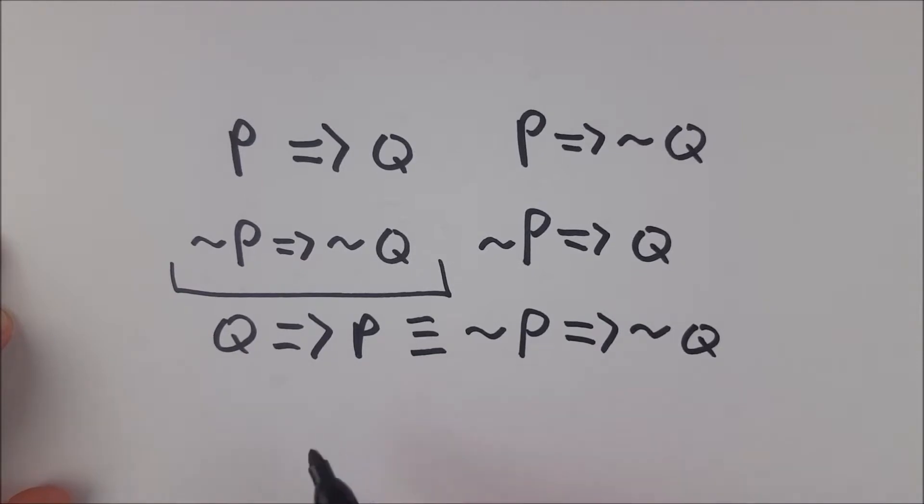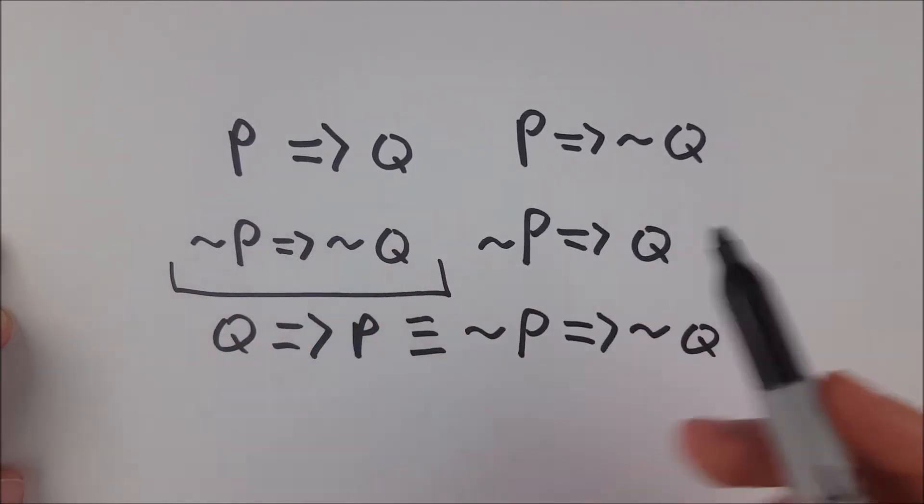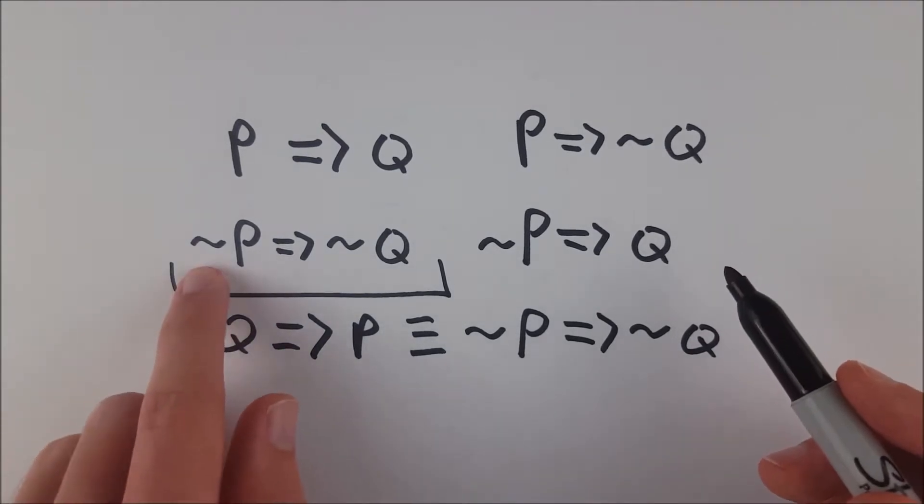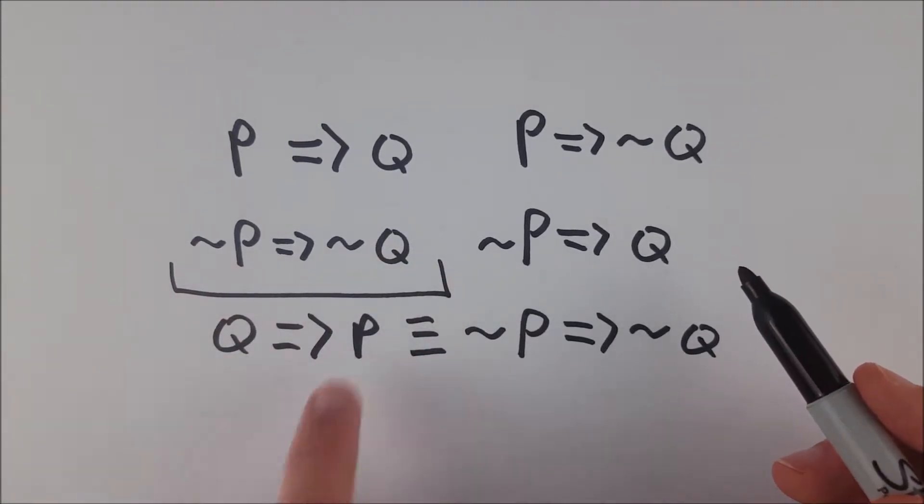Similarly, of course, the converse cannot be assumed from the original statement. So P implies Q does not imply the inverse nor does it imply the converse. However, the converse and the inverse are logically equivalent. So if one is true, then of course, you know that the other is also true.